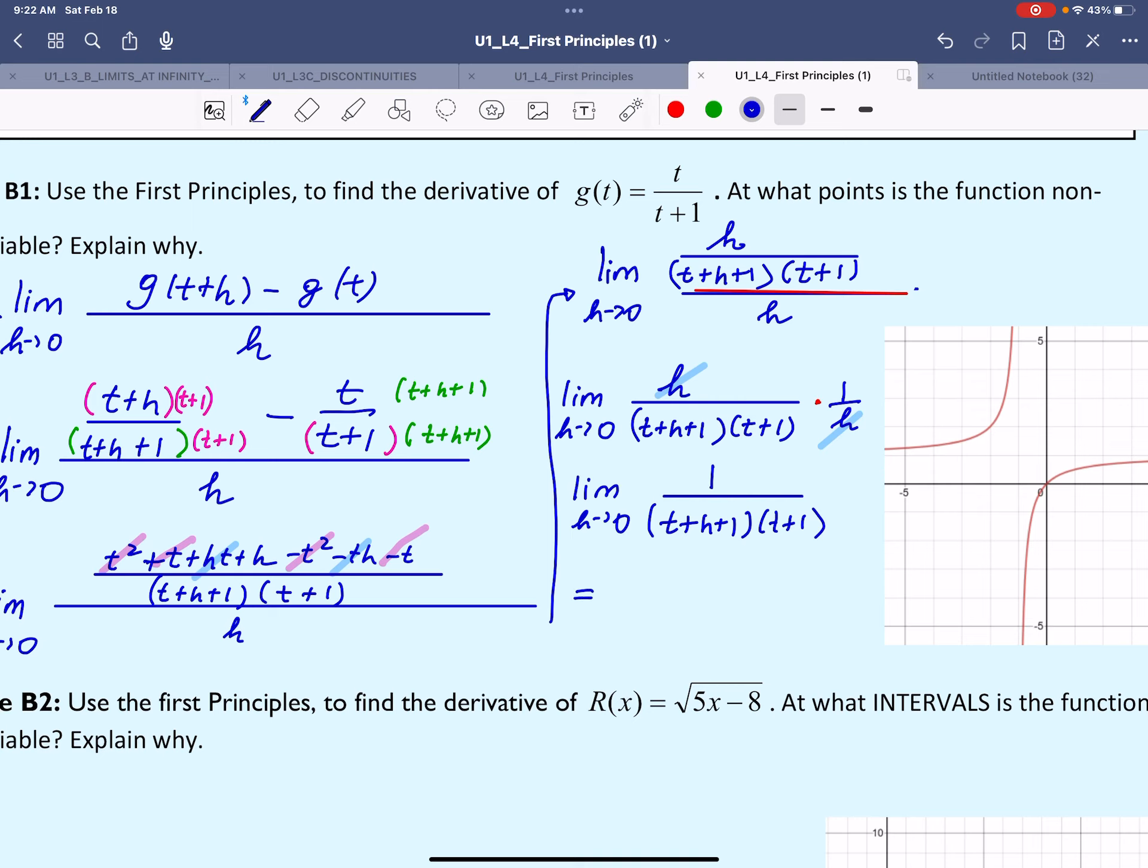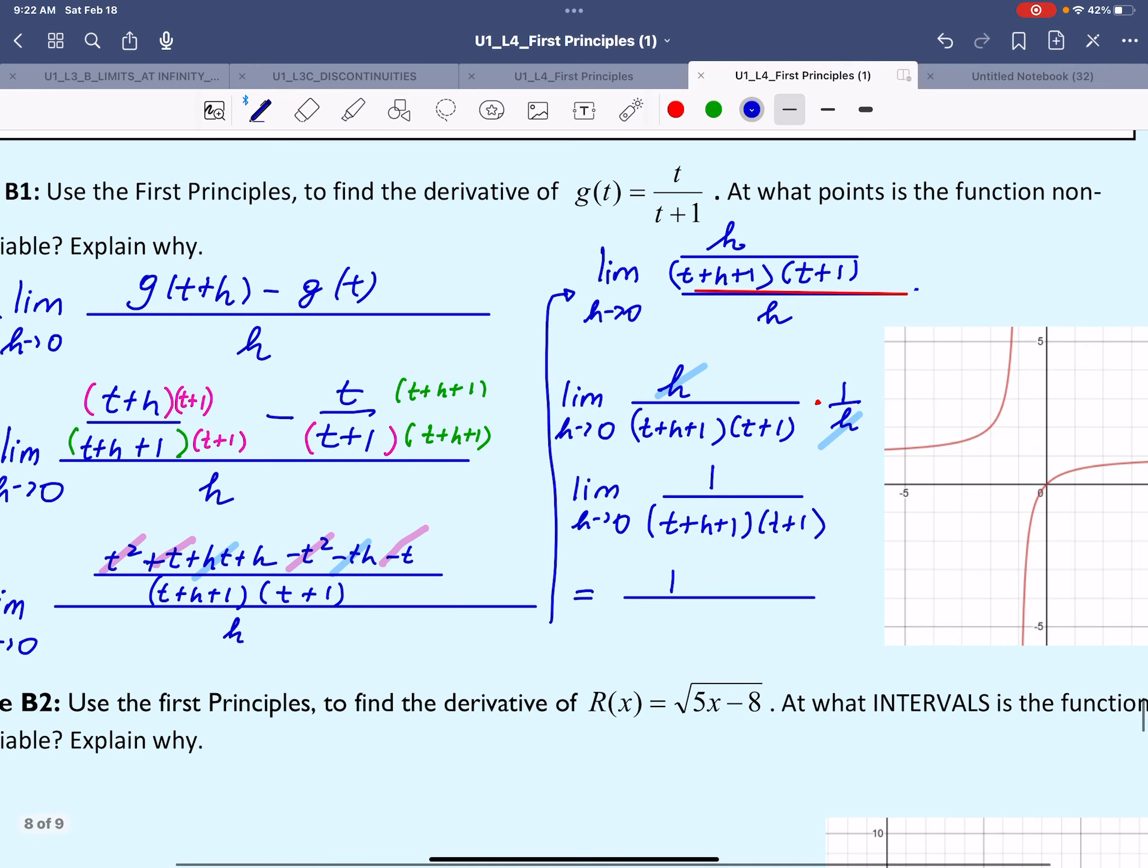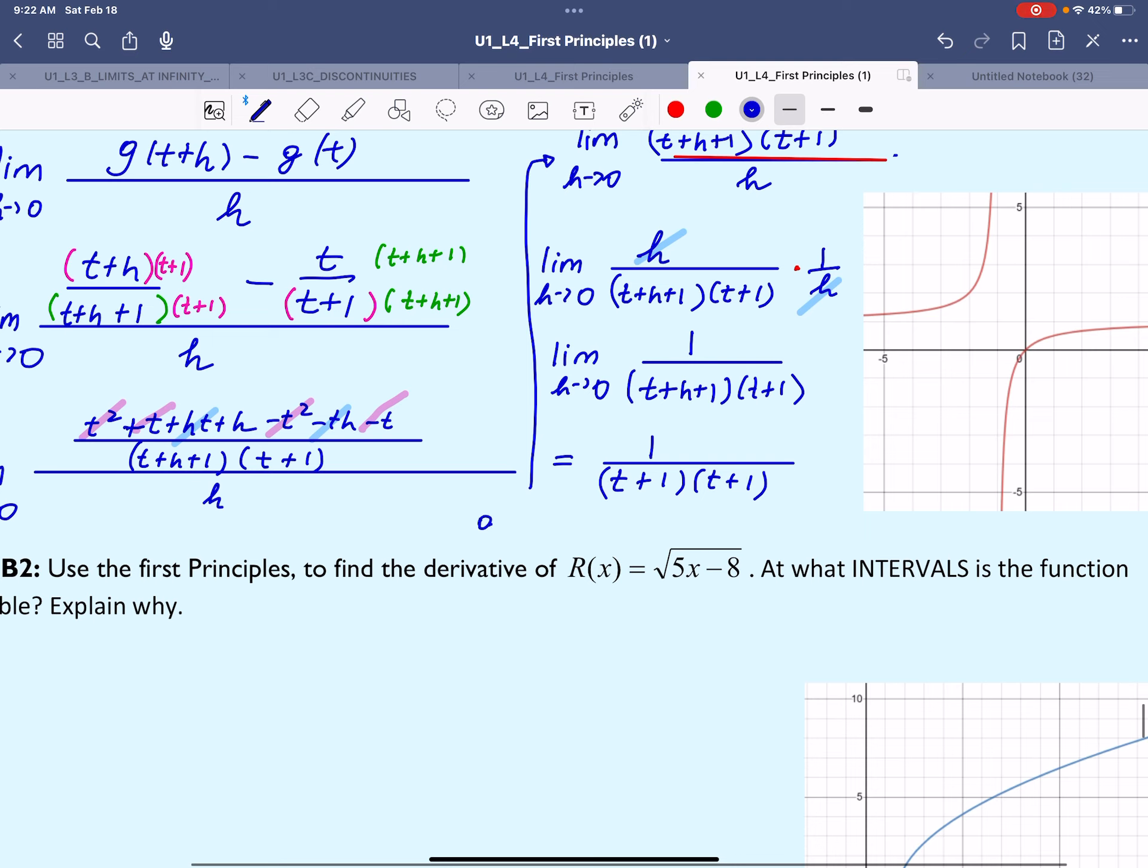It's time to substitute h by 0. We obtain the limit at 0 equal to (t+0+1) times (t+1), which is (t+1)(t+1). The derivative of function g would be 1/(t+1)².